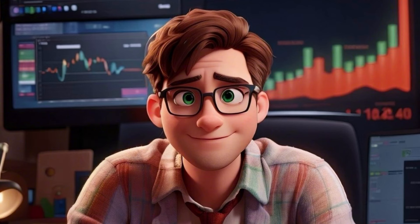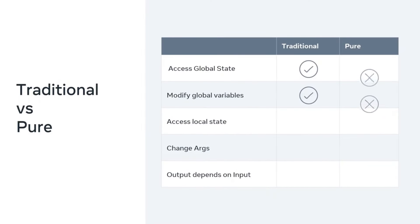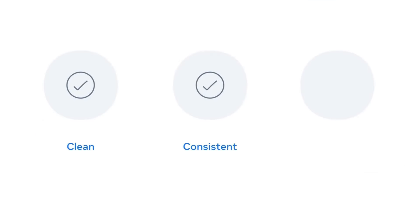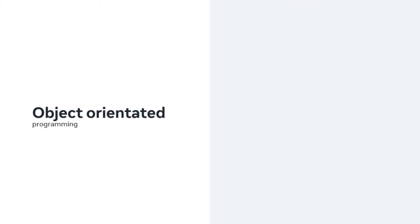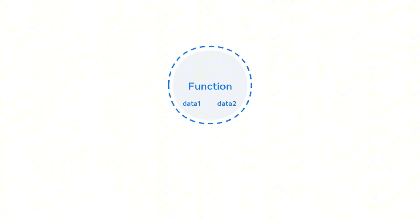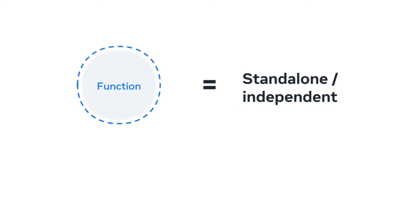There are several differences between traditional and pure functions. Traditional functions can access and modify variables on the global state, but pure functions cannot. Both types can access variables in the local state. Traditional functions can change arguments, whereas pure functions cannot. The output of traditional functions does not depend on input, but the output of pure functions does. Functional programming is a programming paradigm that utilizes functions for clean, consistent, and maintainable code. Compared to object-oriented programming, functional programming differs by design — it does not change data outside the scope of the function, meaning it should avoid modifying input data and should only return the completed result.